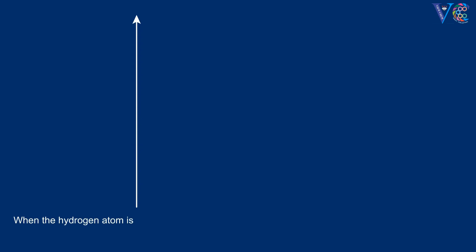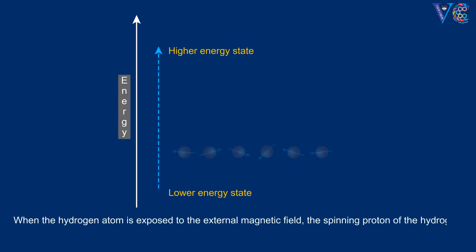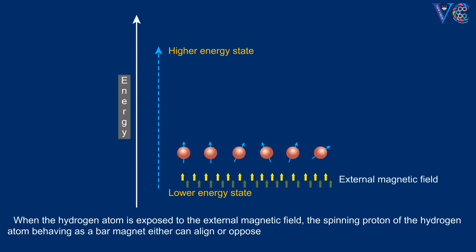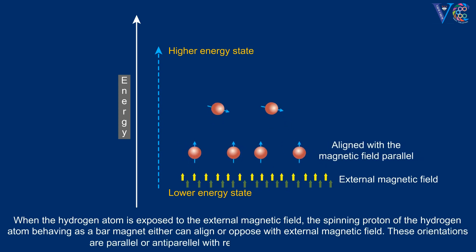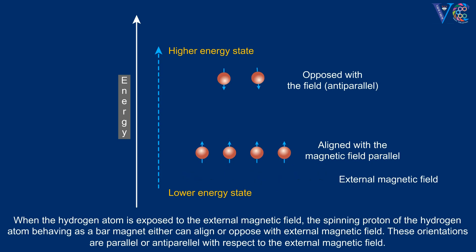When the hydrogen atom is exposed to the external magnetic field, the spinning proton of the hydrogen atom behaves as a bar magnet. It can either align or oppose with external magnetic field. These orientations are parallel or anti-parallel with respect to the external magnetic field.